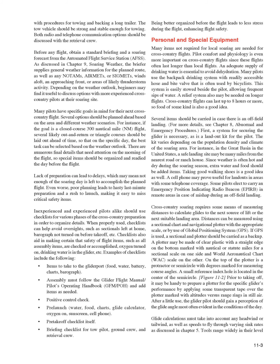Examples of checklists include: items to take to the glider port (food, water, battery, charts, barograph); assembly per the Glider Flight Manual/Pilot's Operating Handbook (GFM/POH); positive control check; pre-launch items (water, food, charts, glide calculator, oxygen, sunscreen, cell phone); pre-takeoff checklist; and briefing checklist for tow pilot, ground crew, and retrieval crew. Being better organized before the flight leads to less stress during the flight, enhancing flight safety.